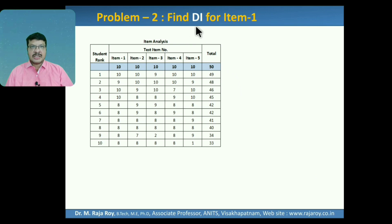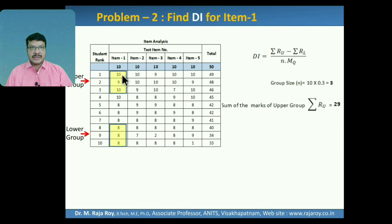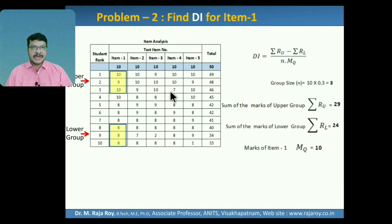Next, find the discrimination index for item 1. Di equals Sigma RU minus Sigma RL divided by N into MQ. Group size N equals 30% of total strength: 10 into 0.3 equals 3. Sigma RU is 29, Sigma RL is 24, and marks allocated to this question is 10. Substituting all these into the DI equation, the DI value is 0.167.